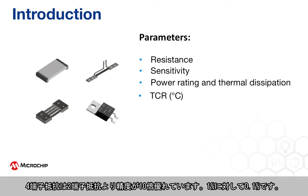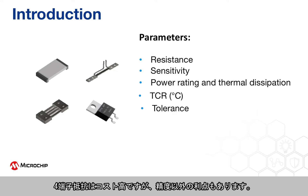The four-terminal resistor can have 10 times better tolerance than the two-terminal resistor — 0.1% versus 1%. The cost of the four-terminal shunt is higher, but there are other benefits, as you will see shortly.